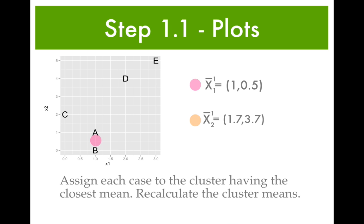We plot these on the data plot. The mean of cluster 1 is now halfway between A and B, and here's the mean for cluster 2, closer to D. So cluster 1 contains A and B, and cluster 2 contains C, D, and E. Our next step is to recalculate the distances of each point from both cluster means.